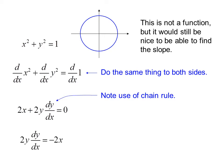Now we can subtract 2x from both sides, and divide both sides by 2y to get dy/dx by itself. After we cancel the 2s, we see dy/dx equals negative x over y.